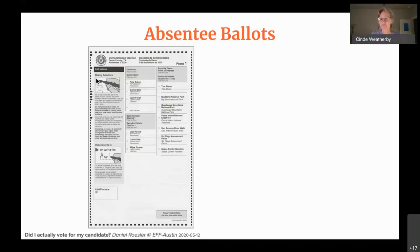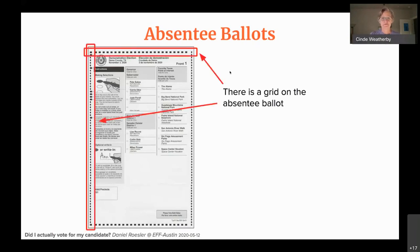Or if you're in jail but otherwise able to vote — that's the other exception. Anyway, the county has to produce the absentee ballot no matter what. What's cool is there's a grid on the side of the absentee ballot.